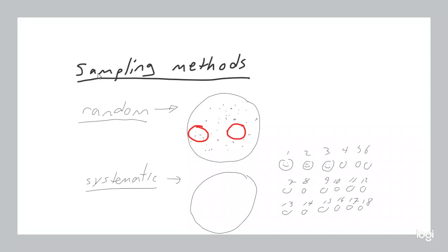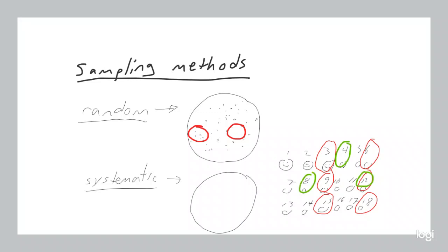For example, if you pick the value 3, you're going to select every third person — person 3, person 6, person 9, person 12, person 15, and person 18. Or if you pick 4, you ask person 4, person 8, person 12, person 16, and so on. So systematic sampling means asking every third, every fourth, or maybe every hundredth person if your population is millions.